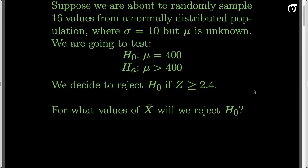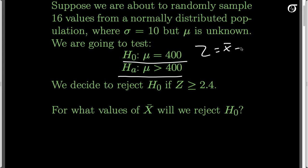Let's do an example calculating the power of a test and the probability of a type 2 error. Suppose we were about to randomly sample 16 values from a normally distributed population where sigma equals 10 but mu is unknown. We are going to test the null hypothesis that mu equals 400 against the alternative that it is greater than 400, using the z-test: z equals x-bar minus mu-naught over sigma over the square root of n.